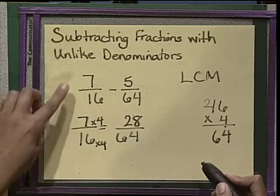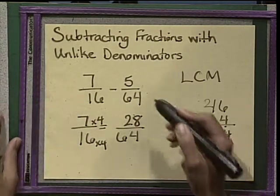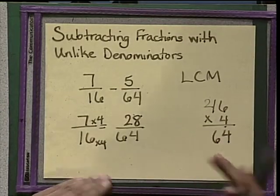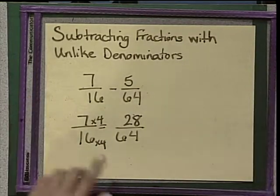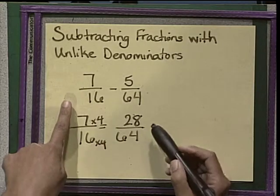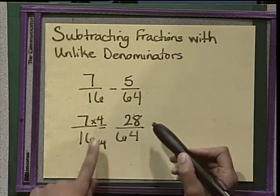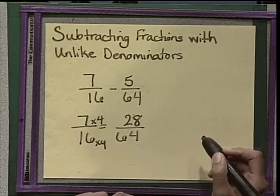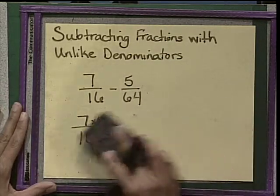So the original problem is 7/16 minus 5/64. We can now go ahead and subtract. Okay? So I am going to replace my equivalent fraction now. 28/64 is the same as 7/16. And I am going to go ahead and do the subtraction problem and let's see how that works out.